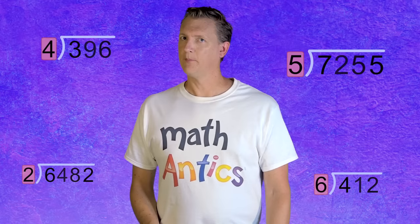The key was to break up a big division problem into a series of smaller and easier division steps. And that involved trying to divide the dividend one digit at a time, digit by digit. And in the examples we saw, going digit by digit was pretty easy because we only had one-digit divisors.